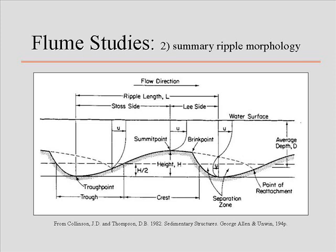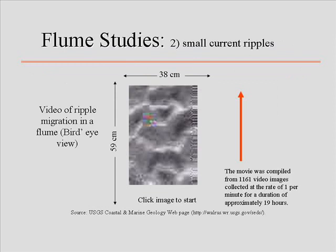We also talked about how ripples migrate downstream. I wasn't going to show you a video at first, but I think I will. Over time, ripples migrate downstream. The best way to illustrate this is to look at a flume. The reason I hesitated is that this is really pixelated — the actual image is about this big and I blew it up as much as I could to still show you how it works.